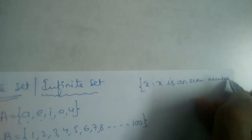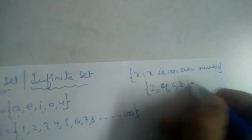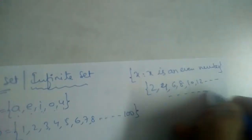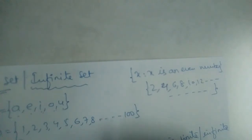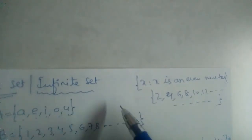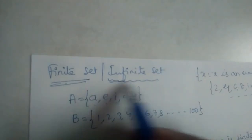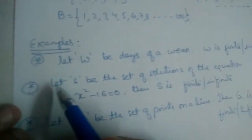Now, what is an infinite set? A set in which there are infinite elements is called an infinite set. For example, let X be the set of all even numbers — 2, 4, 6, 8, 10, 12, and so on. There are infinitely many even numbers. Such sets are called infinite sets.